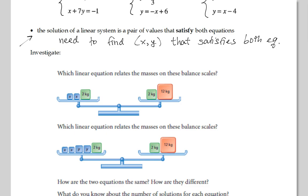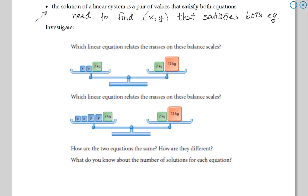So let's take a look at the first situation. Investigation. Which linear equation relates the masses on these balanced scales? So what do you have on the left side there? You have two x's and a two kilogram. The balance scale symbolizes the equality, and on the right side there, you've got two plus twelve is fourteen. And on the second balance, how many x's you've got there? Two x's and two y's and a two is being balanced by fourteen. So how are the two equations the same? How are the two different? Well, one of the equations has only x, and the other equation has x and y. They both equal fourteen.